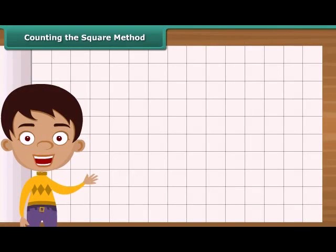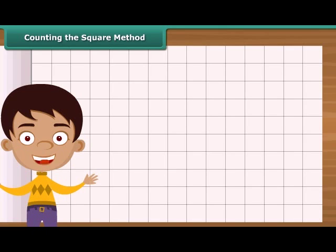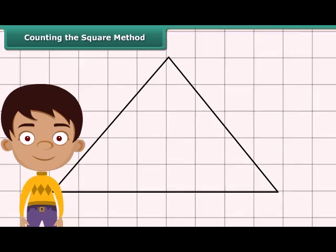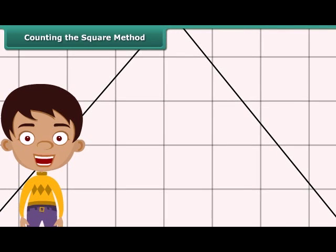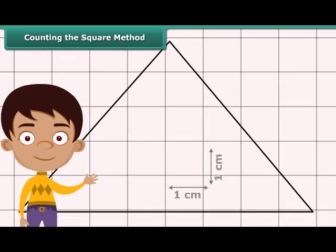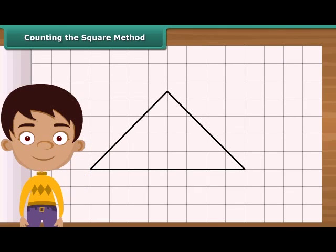Now let us calculate area with the help of a simple method — it is known as the counting the squares method. Draw the triangle on squared paper, where each square has a side of one centimeter. First, count the complete squares enclosed by the triangle and mark each of these squares as A.